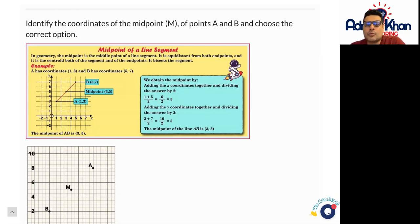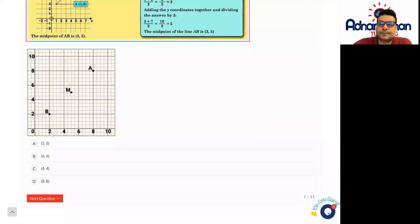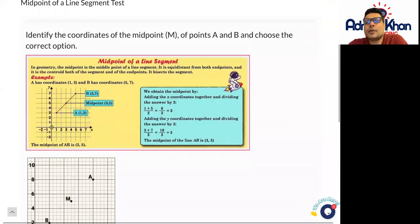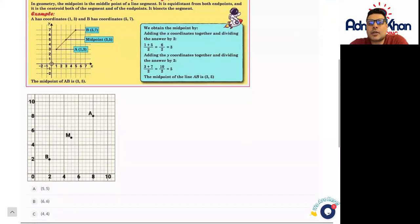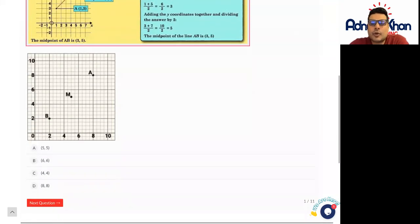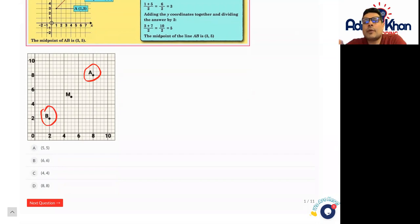Let's give you an example. The question states: identify the coordinates of the midpoint M of points A and B and choose the correct option. We've got two points here, A and B. Now we need to work out what the midpoint of A and B is. Let me show you from the beginning how to work out midpoints.